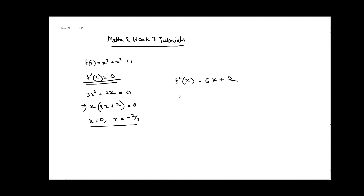If we evaluate f''(0) — putting in the first critical point x = 0 — we get 2, which is greater than 0. So at x = 0, this function attains a local minima.